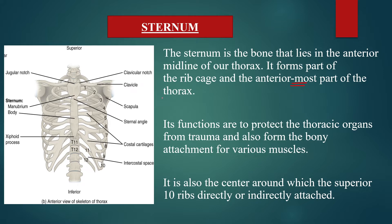The functions of the sternum: it protects your thoracic organs — your lungs and your heart — from any trauma. This rib cage, of which the sternum is a part, protects those thoracic organs. It also forms the bony attachment for various muscles, giving a place for the attachment of different muscles in the thoracic region.